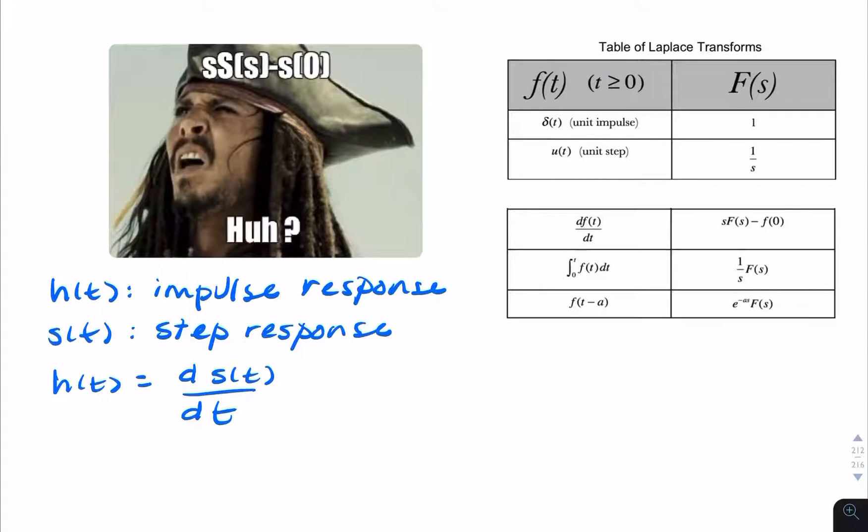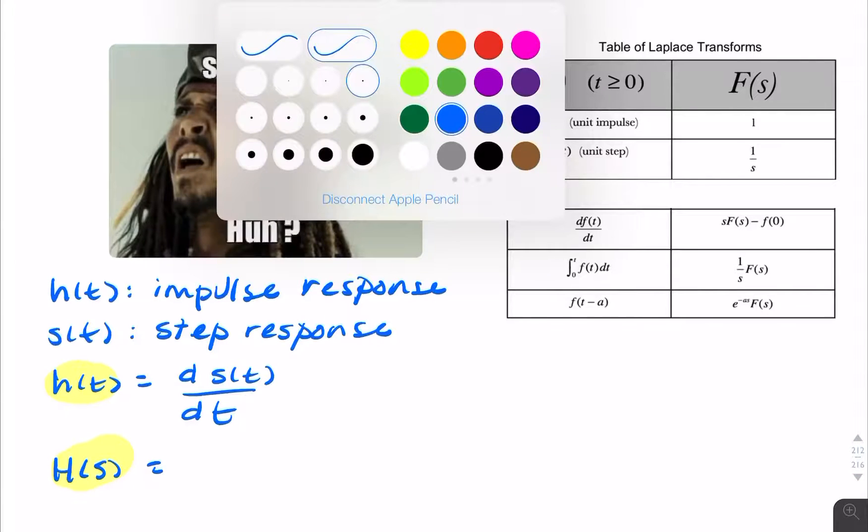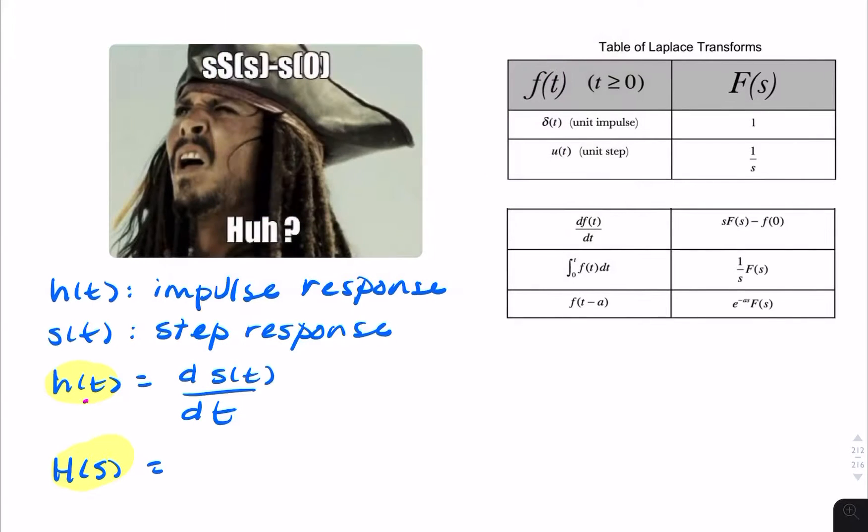And if we want to find the transfer function, that's the Laplace transform of the impulse response. So we now want to find the Laplace transform of that. So we can use the table to find the Laplace transform of a derivative.